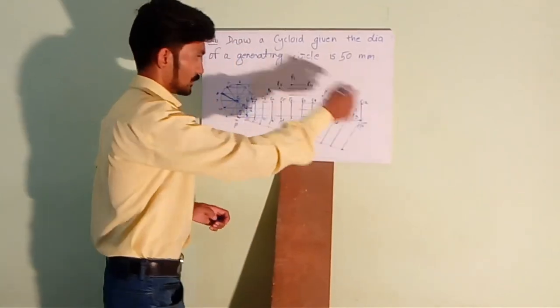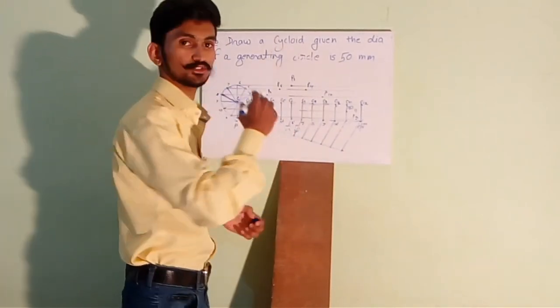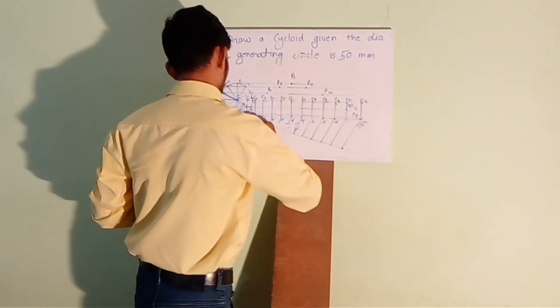So, this is how we can get the required number of points and join all these points with a smooth curve to get the required cycloid.